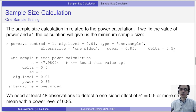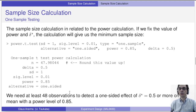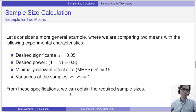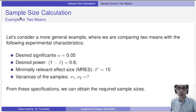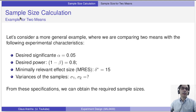We need 48 observations to detect a one-sided effect of delta equal to 0.5 or more on the mean with a power level of 0.85. What if we have two means? What if we are comparing two samples? Let's consider similar parameters: desired significance level of 0.05 and desired power of 0.8.